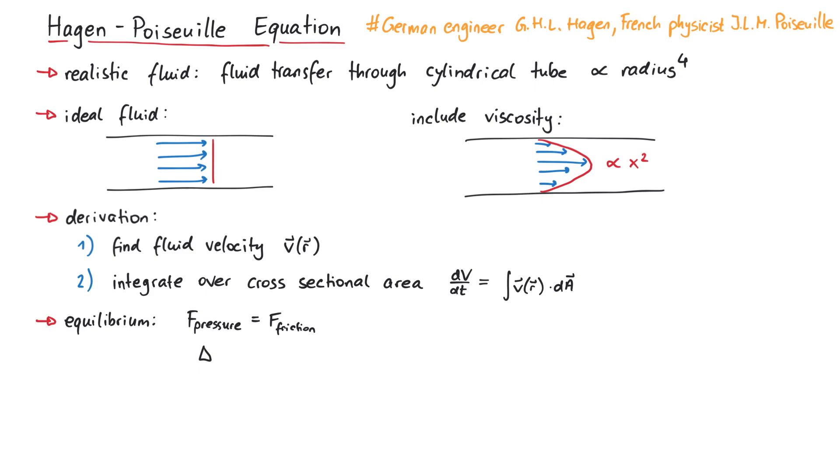The pressure force is simply given by delta P times A, where delta P is the pressure difference between one end of the tube and the other end, and A denotes the cross-section of the tube, in our case a circle.